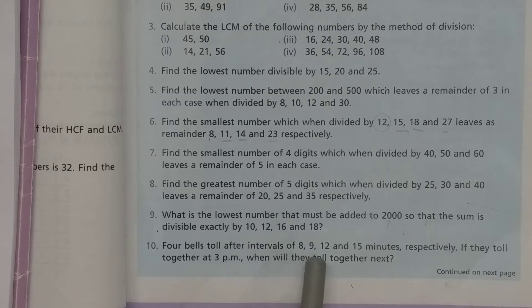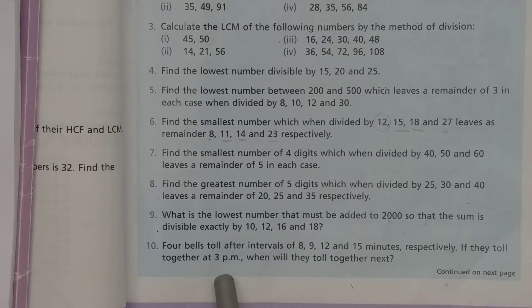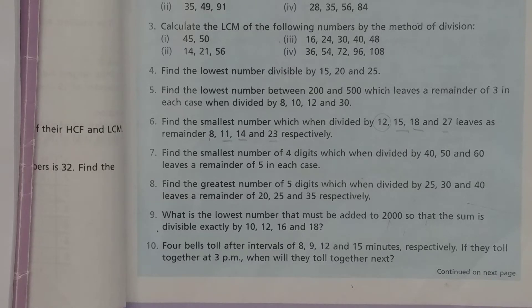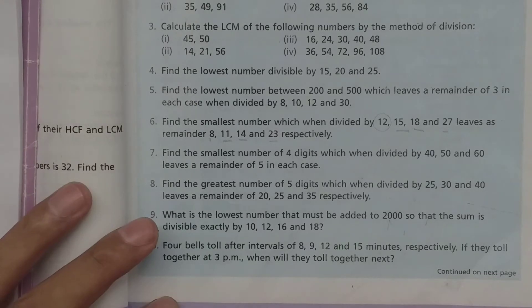Question number ten is about LCM and HCF. Four bells toll at intervals of eight, nine, twelve, and fifteen minutes respectively. If they toll together at three pm, when will they toll together next time? چار bells ہیں جو آٹھ، نو، بارہ، اور پندرہ منٹ کے وقفے سے بجتے ہیں — پہلی بار دوپہر تین بجے ایک ساتھ بجائے گئے۔